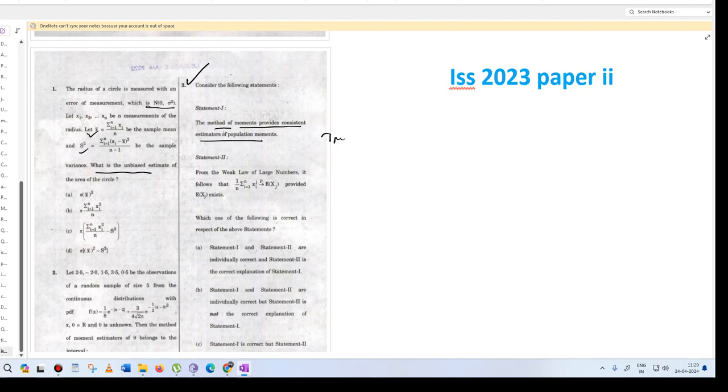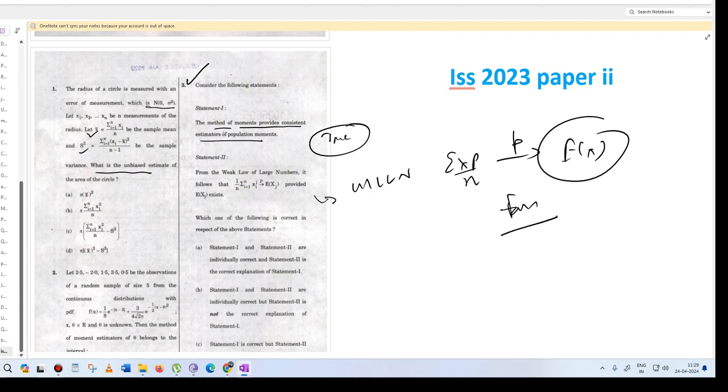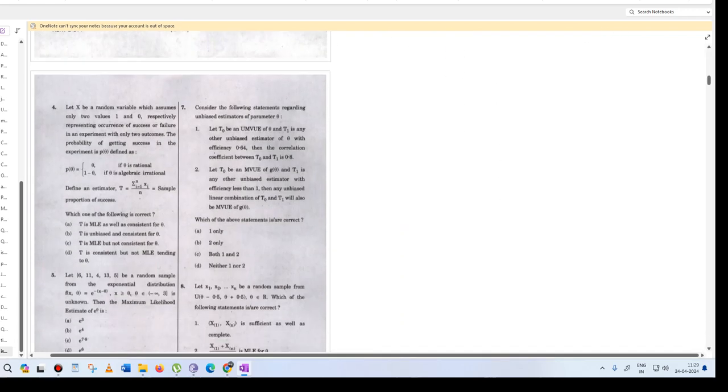And in this part, the weak law, this thing is summation of x to the p by n for any p value, this is e of x. This is actually a false statement. So option number C is correct, first one is right, second one is wrong.